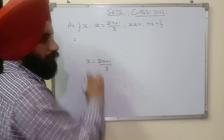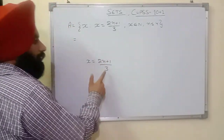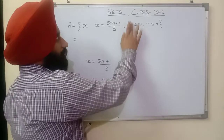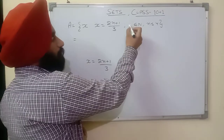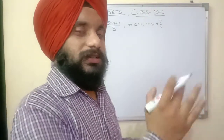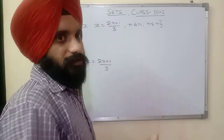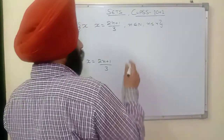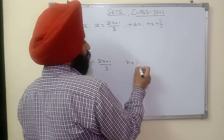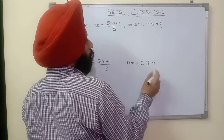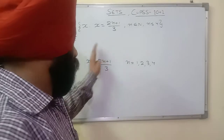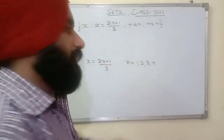x represents the elements of this set. Now, x = (2n + 1)/3, which means x depends upon n. First we have to find the values of n, then we can find the values of x. Here n is a natural number less than or equal to 4. Natural numbers start from 1, so n can be 1, 2, 3, and 4. We place each value into the formula to get the values of x.